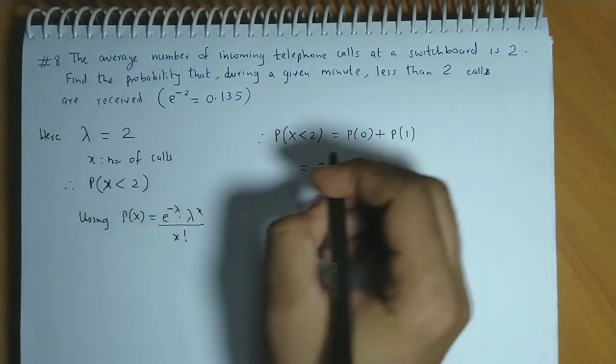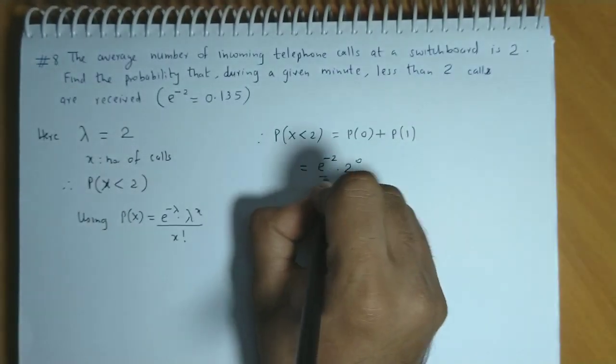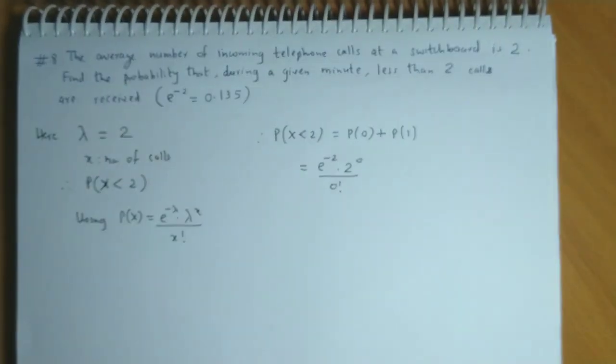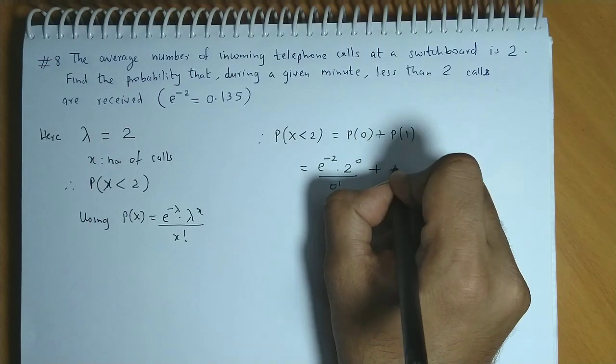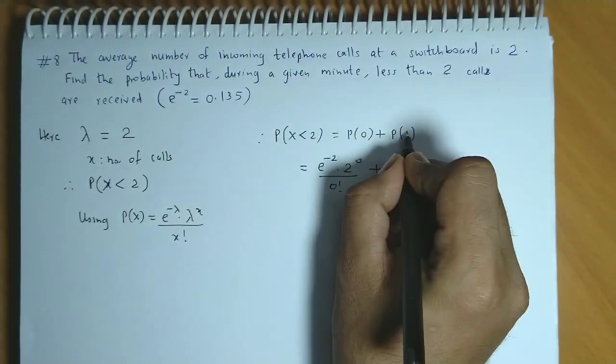So e raised to minus lambda that is minus 2, 2 raised to x that is 0 upon x factorial that is 0 factorial. Plus e raised to minus lambda into lambda raised to x.